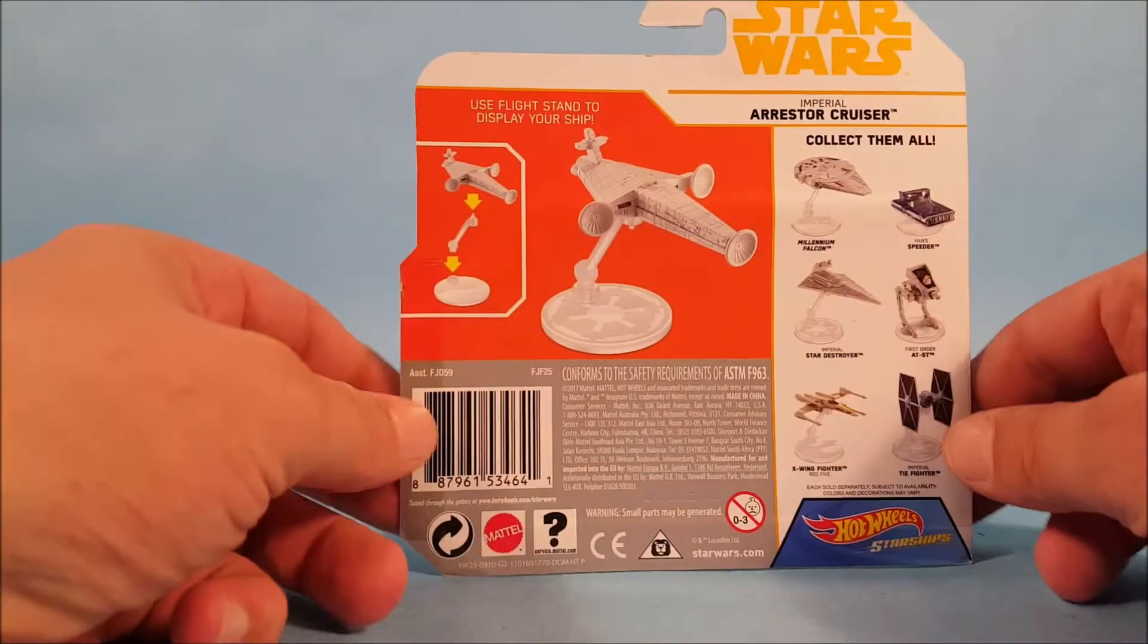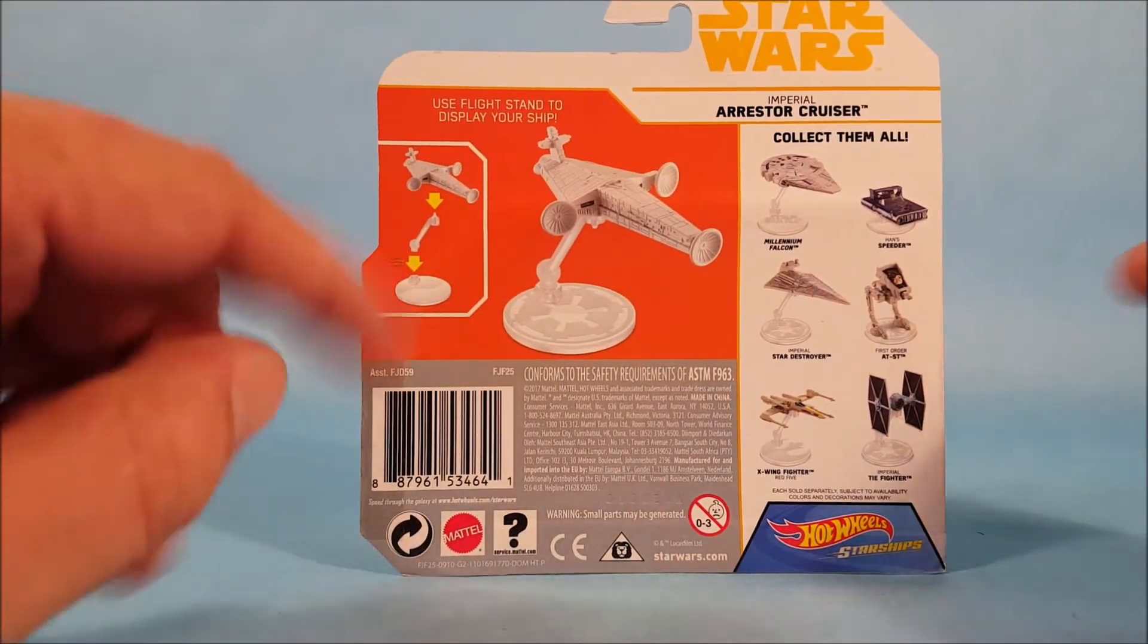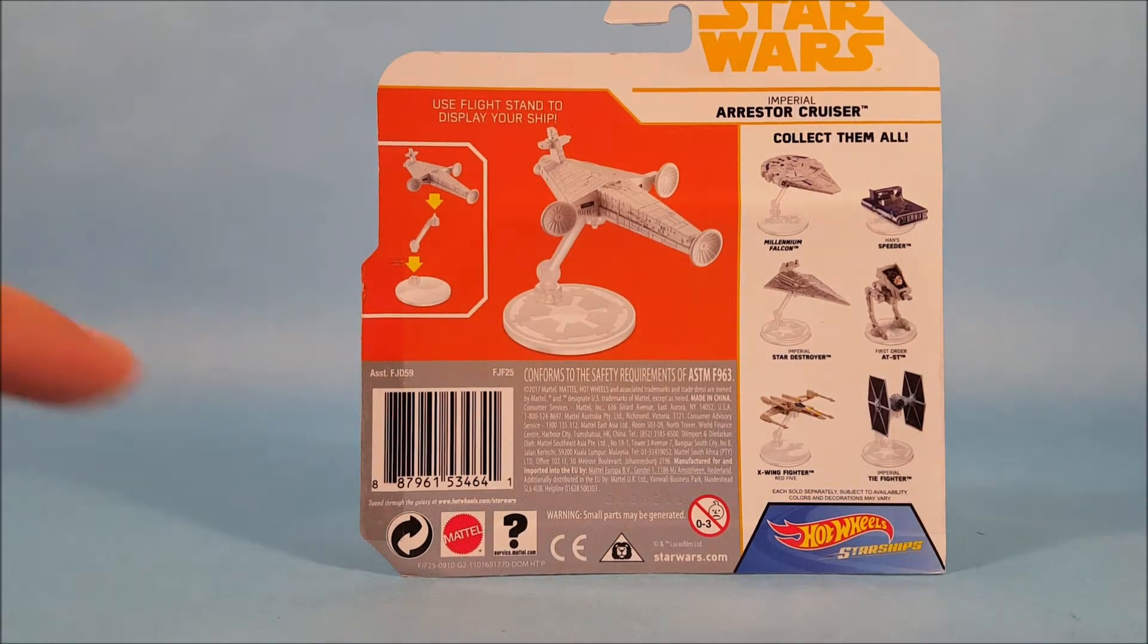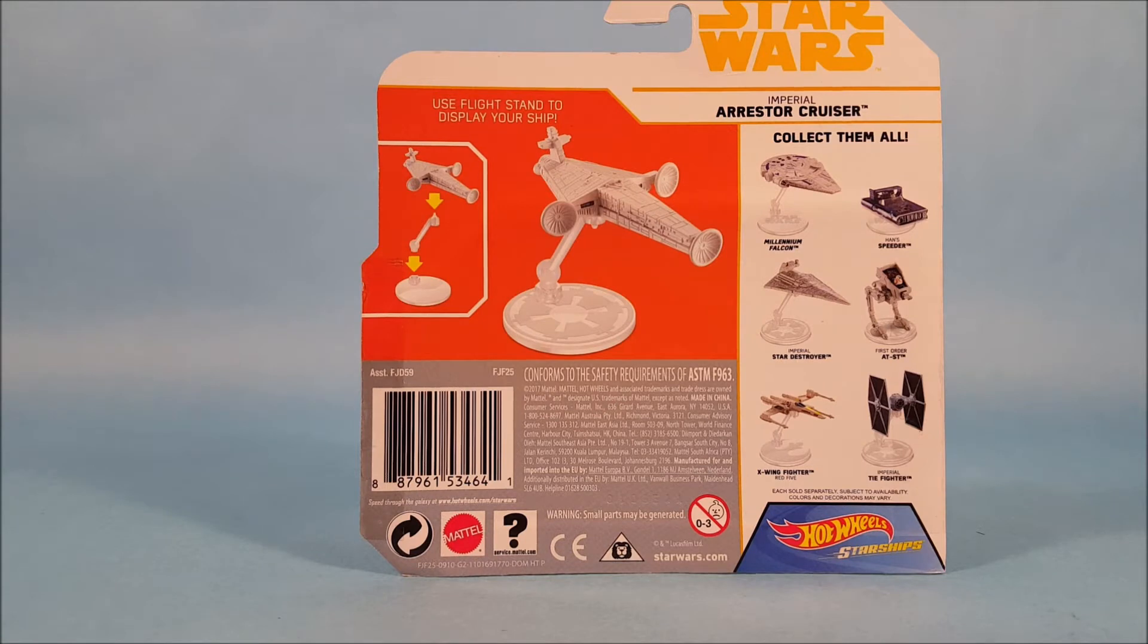And unfortunately, as a collector, I like to see vehicle and character descriptions on the back, but with the Hot Wheels Starship line, you don't really get that. They just have a picture of the product on the back and some of the other toys in the collection.